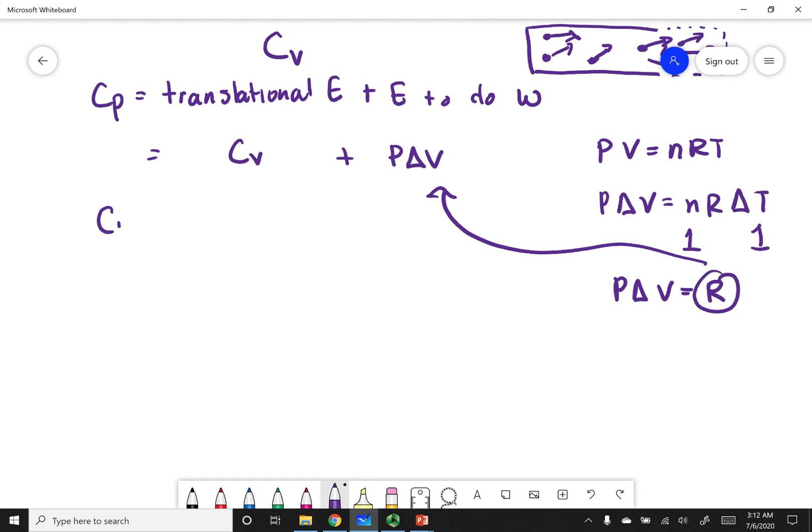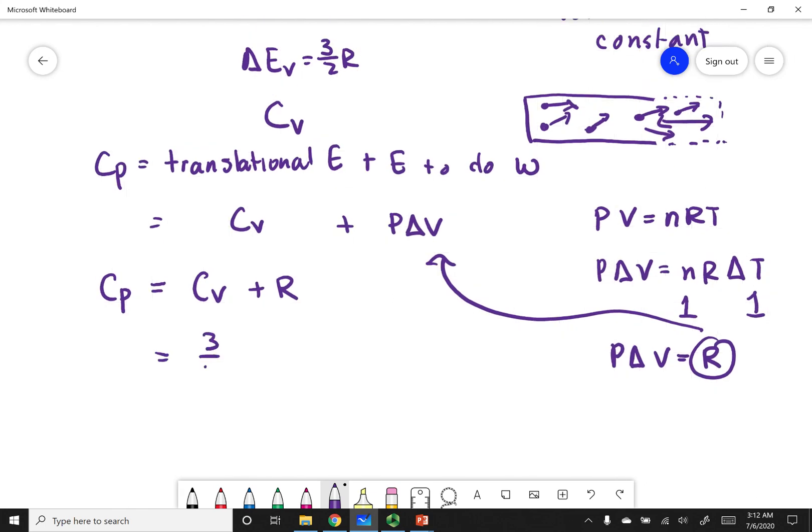So I'm going to go ahead and substitute R into here. And so what I get is that Cp, or the molar heat capacity under constant pressure, equals Cv plus R. Now we already determined that Cv was equal to 3 halves R. And so if I add another R, Cp is going to be 5 halves R.